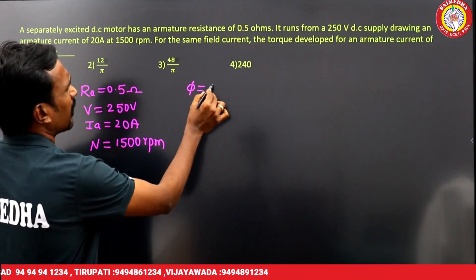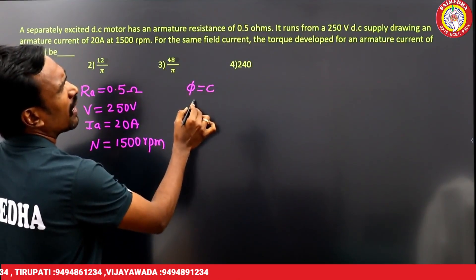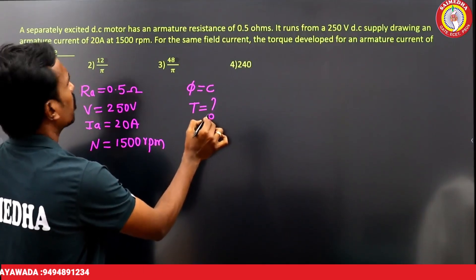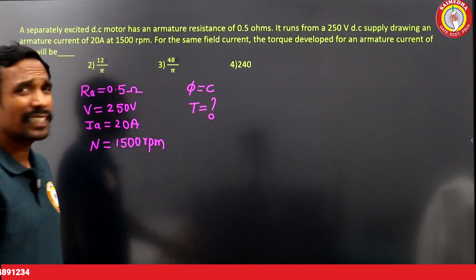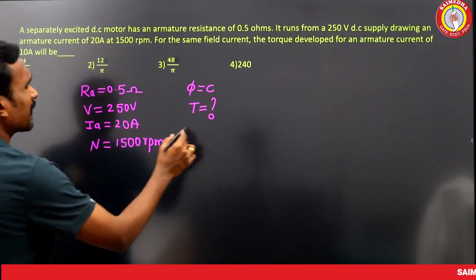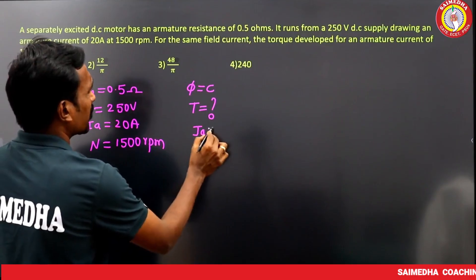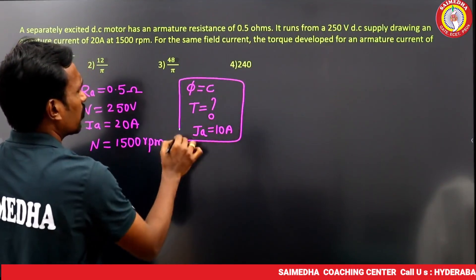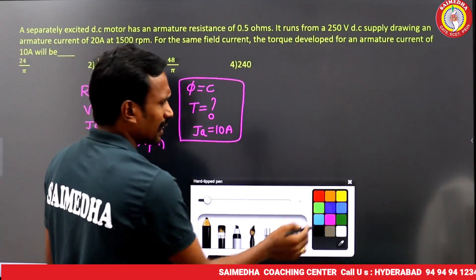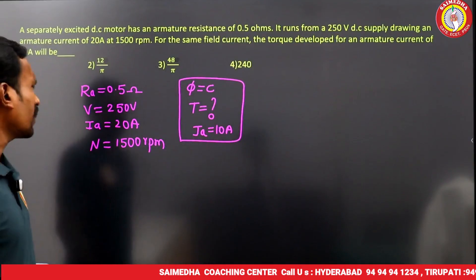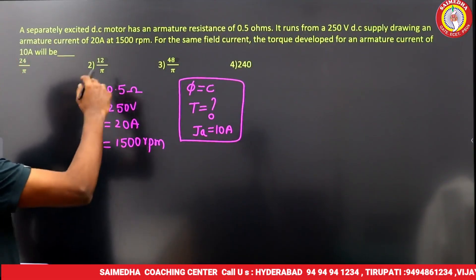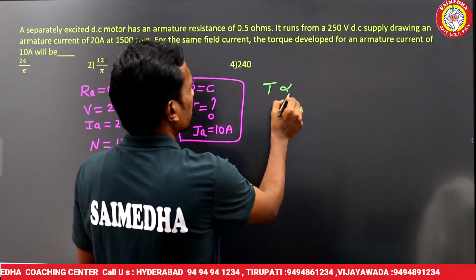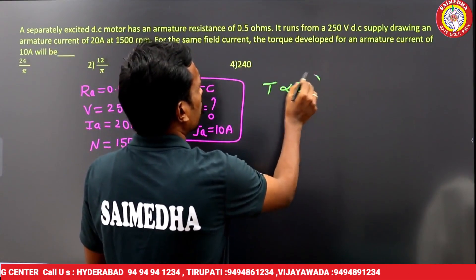For the same field current — meaning flux is constant — what is the torque developed by the machine when the armature current is 10 amperes? In a separately excited motor, torque is directly proportional to armature current (Ia) since flux is constant.